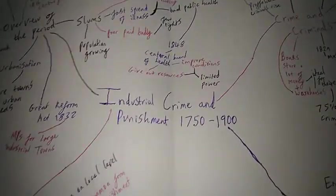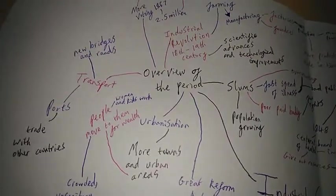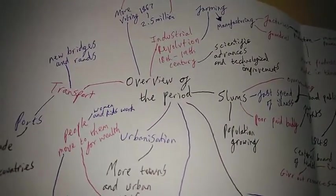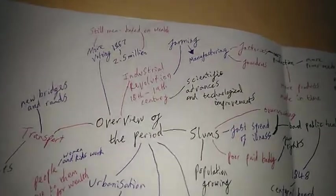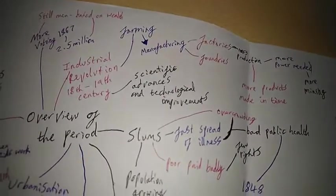And it's 1750 to 1900. So as always, start off with a quick overview of the period. The Industrial Revolution took place in the 18th to 19th century, where there were many scientific advances and technological improvements.